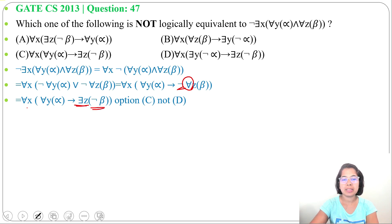The same is present in option C. For all X, for all Y, alpha implies there exists Z negation of beta. But not D. Due to this, it is not logically equivalent.